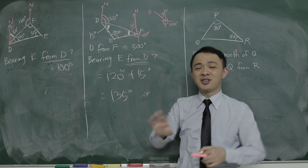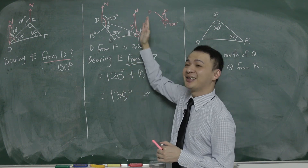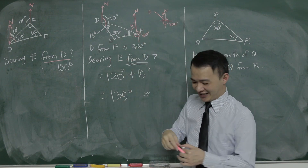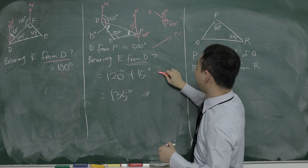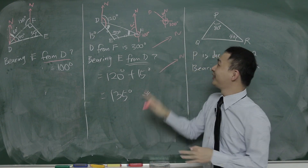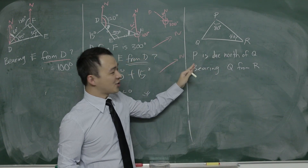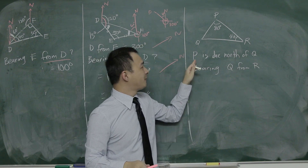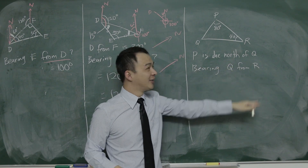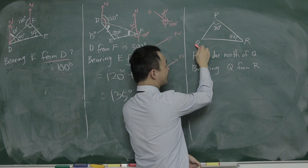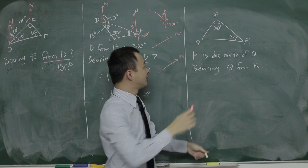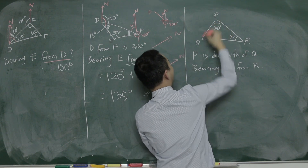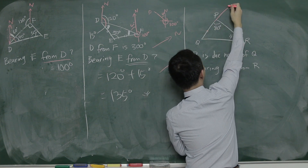This second example is still manageable because the north still faces upward. Note that north can face any direction — if they say north faces a certain direction, all your north lines must follow that direction. In the third question, north is not drawn but given in the sentence. They tell you P is due north of Q, meaning P is at the north direction of Q. So the north must be parallel to this line — my north must face this direction.